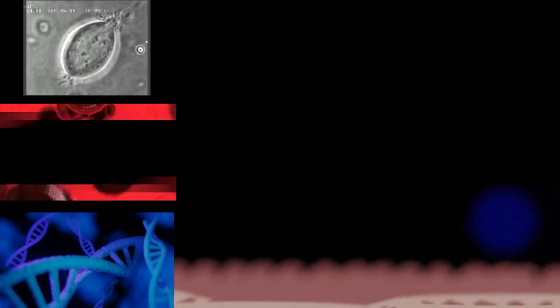Most prokaryotes are between one micrometer and ten micrometers, but they can vary in size from 0.2 micrometers, Mycoplasma genitalium, to 750 micrometers, Thiomargarita namibiensis.